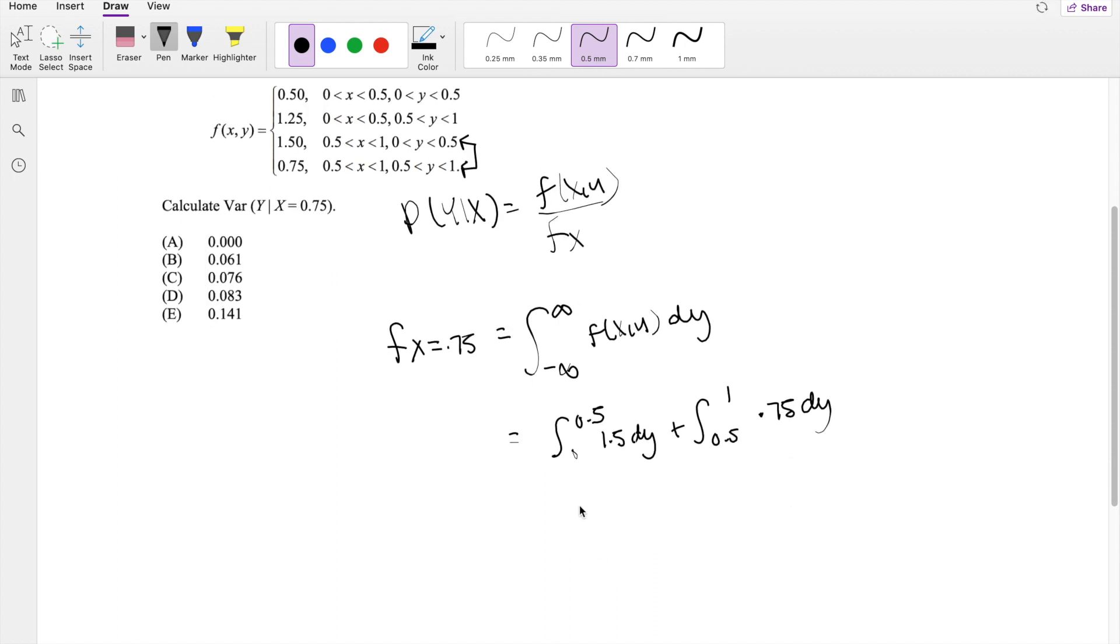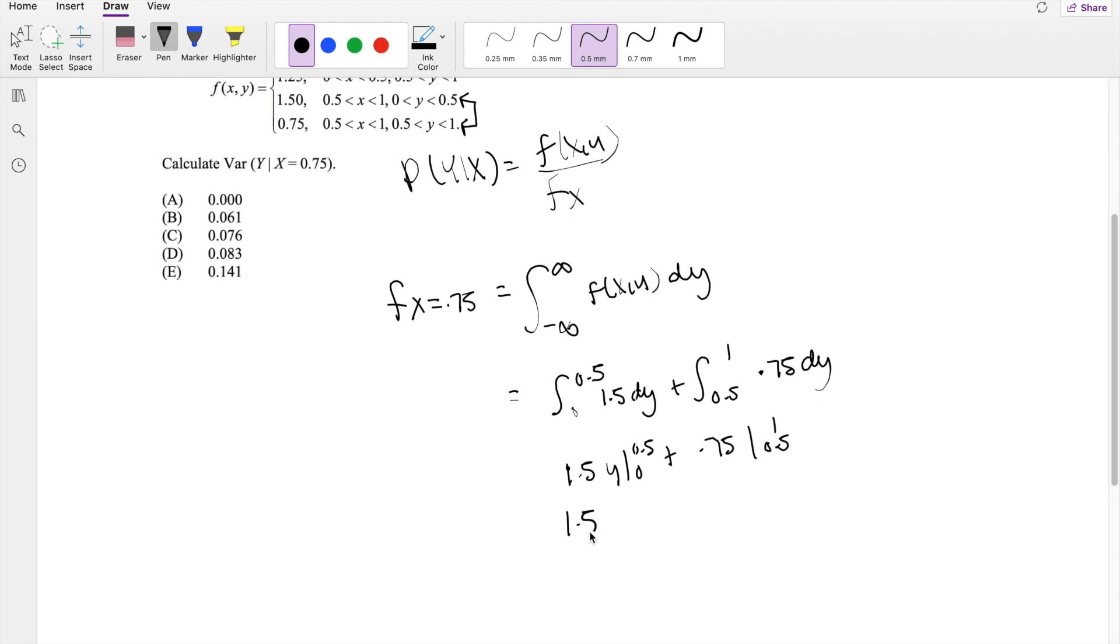Taking the anti-derivative, you get 1.5 y integrating from 0 to 0.5 plus 0.75 integrating from 0.5 to 1. Putting in the upper limit here, it's going to be 0.5 minus 0. Putting in the upper limit here, it's going to be 1 minus 0.5. So then this ends up being equal to 1.125.